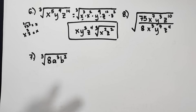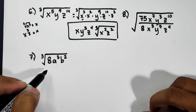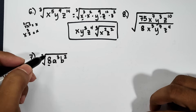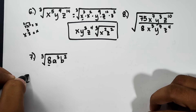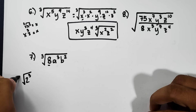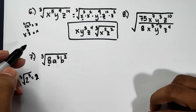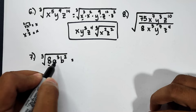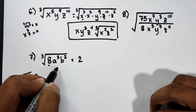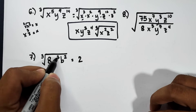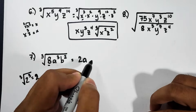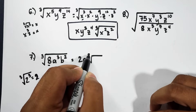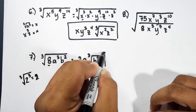Let's move on with number 7. For number 7, 8 is a perfect cube because 8 is the same as 2 cubed. So when you take the cube root of 8, the answer is 2. The cube root of a cubed: 3 divided by 3 is 1, so it becomes just a. Since b squared is not a perfect cube, it will remain inside as the cube root of b squared. The final answer is 2a times the cube root of b squared.